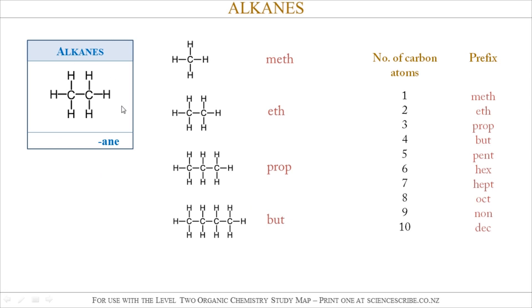Now, all Alkanes end with the suffix -ANE. So here, in my first one, I've got Methane, Ethane, Propane, and Butane.